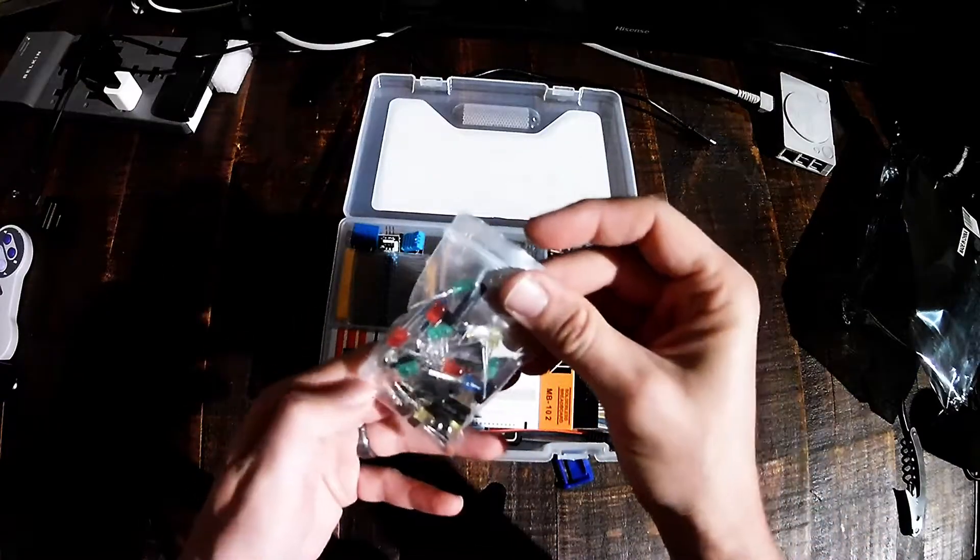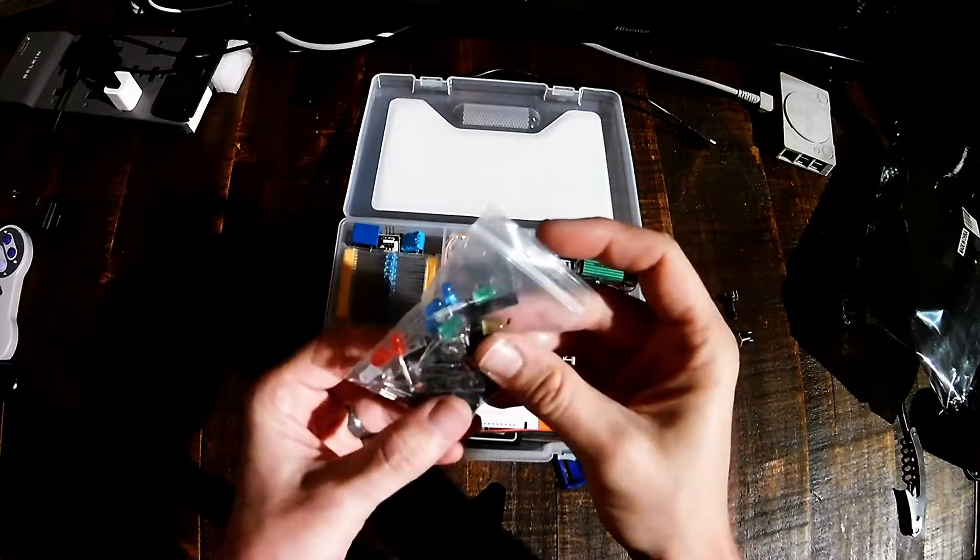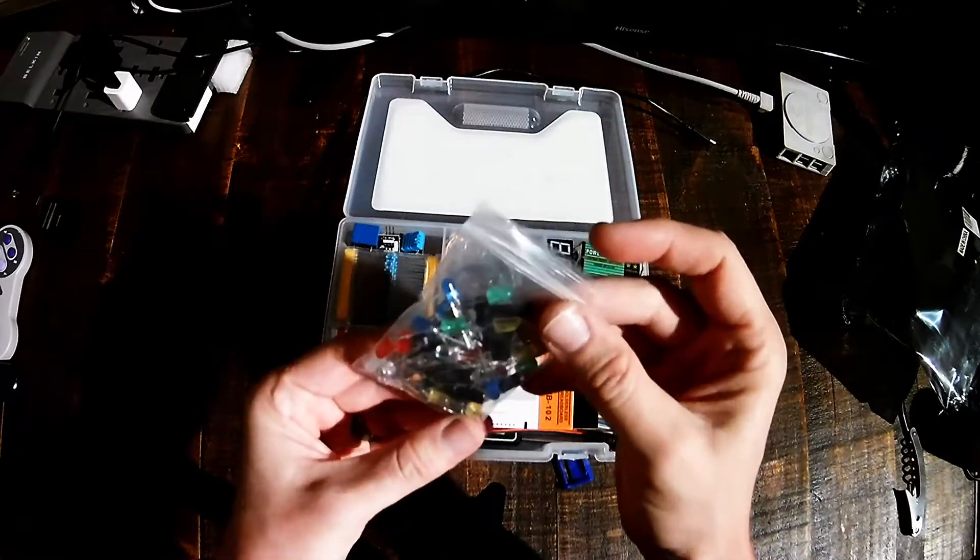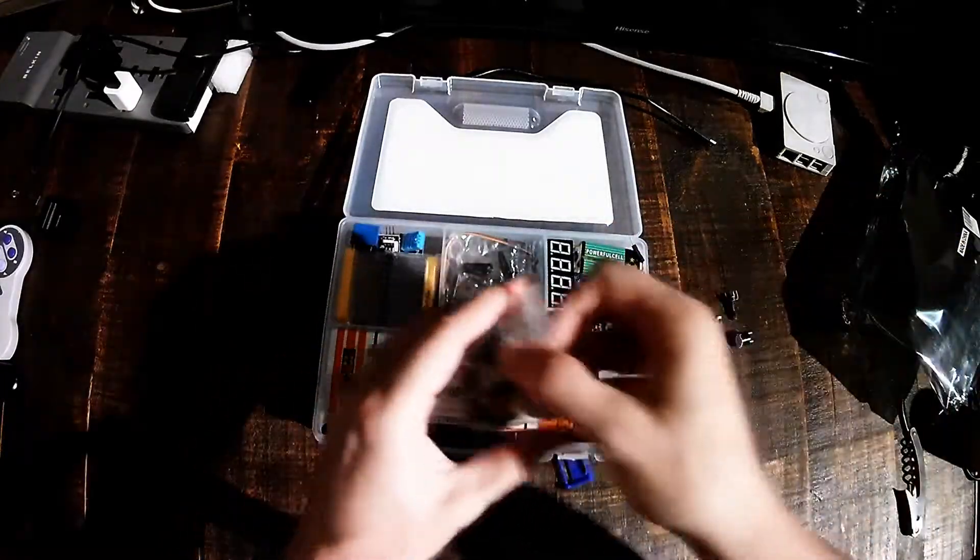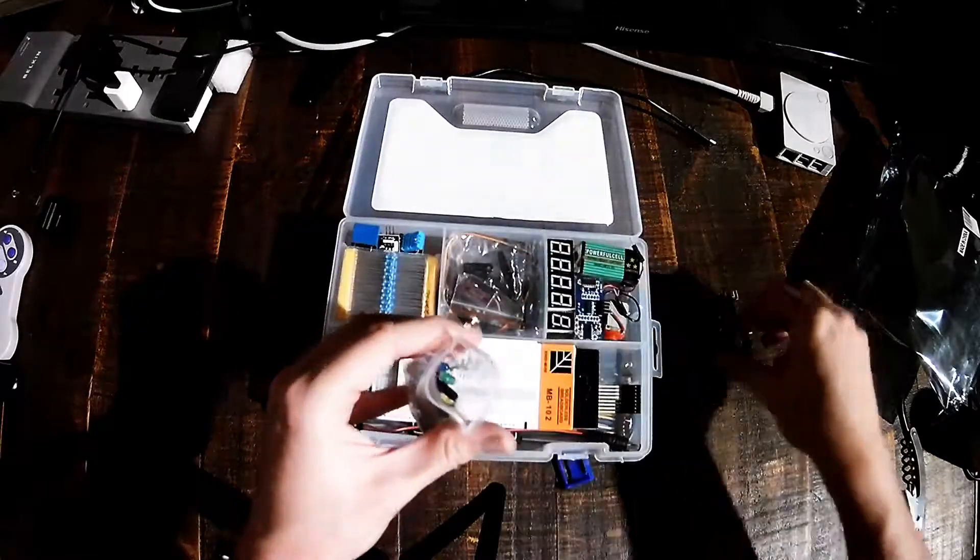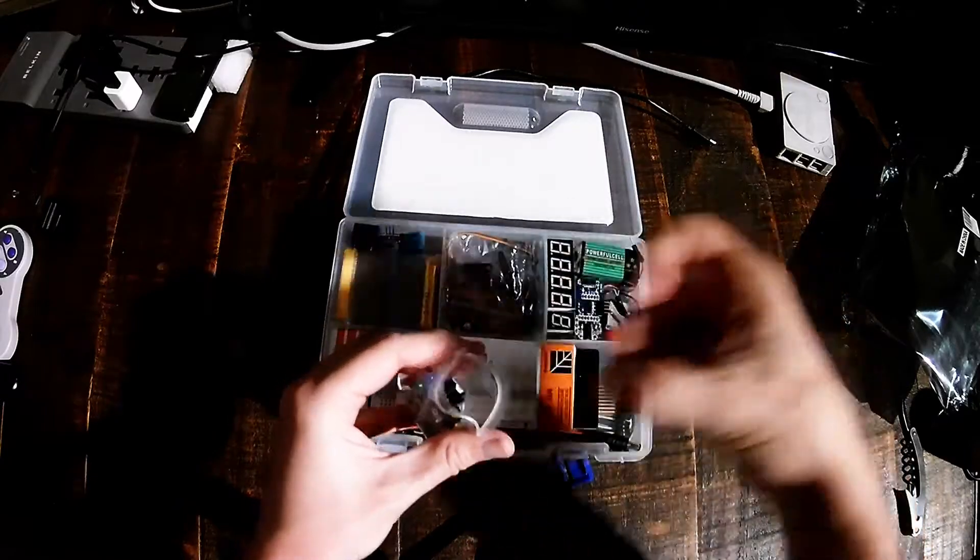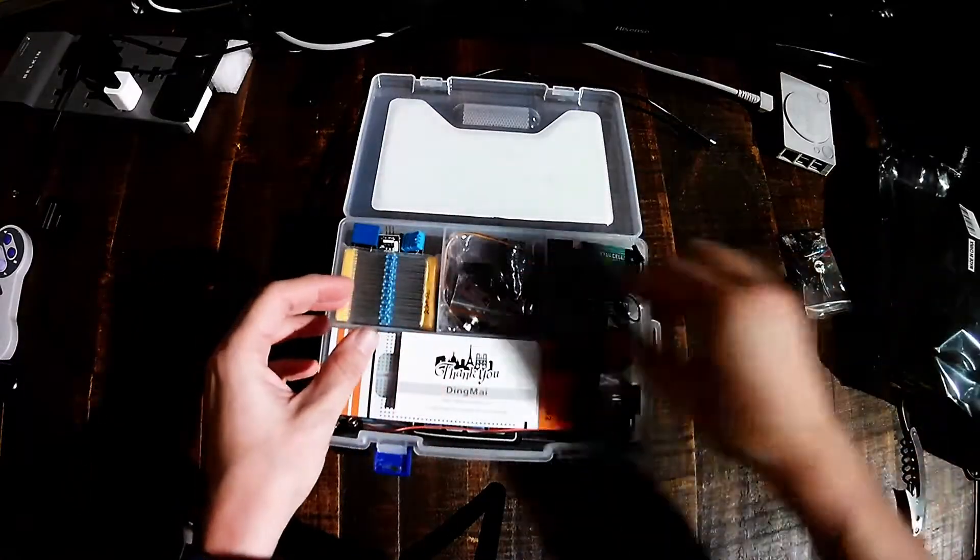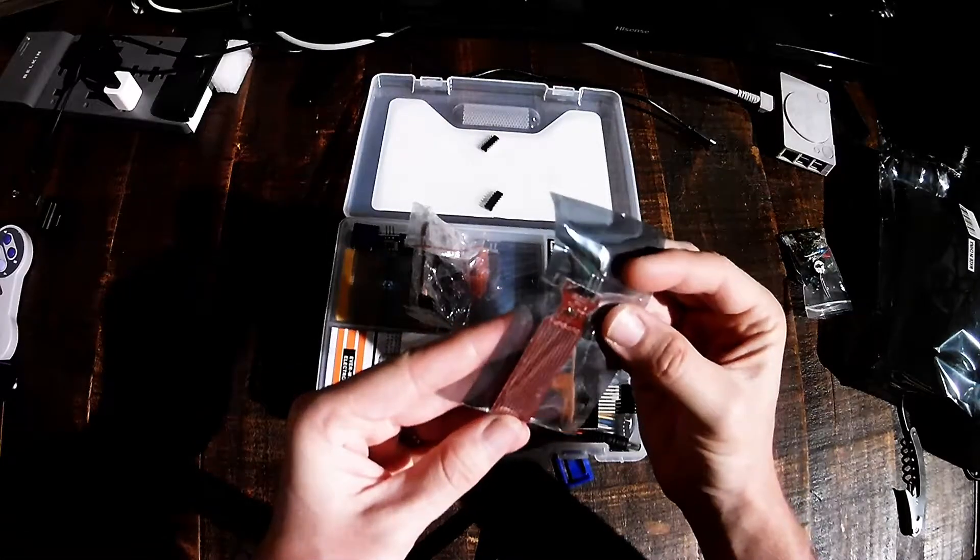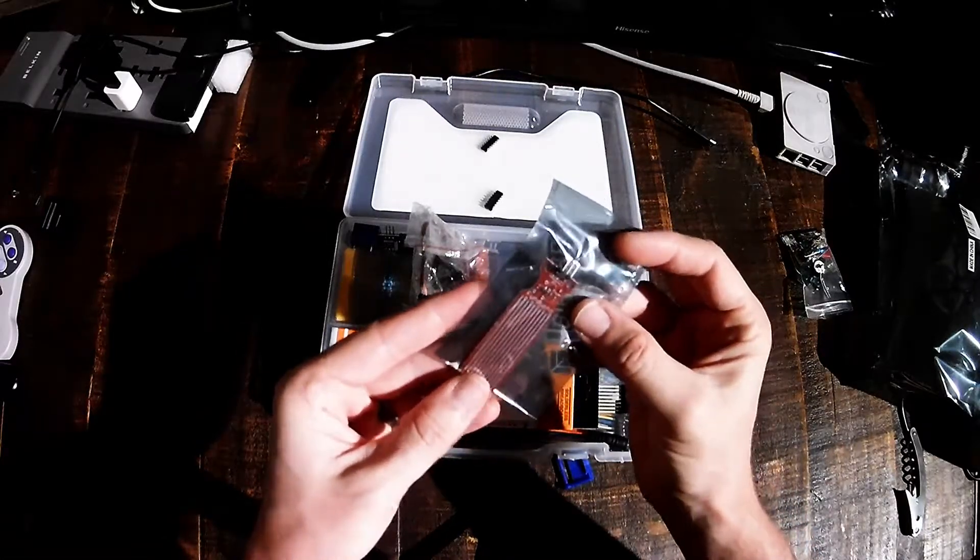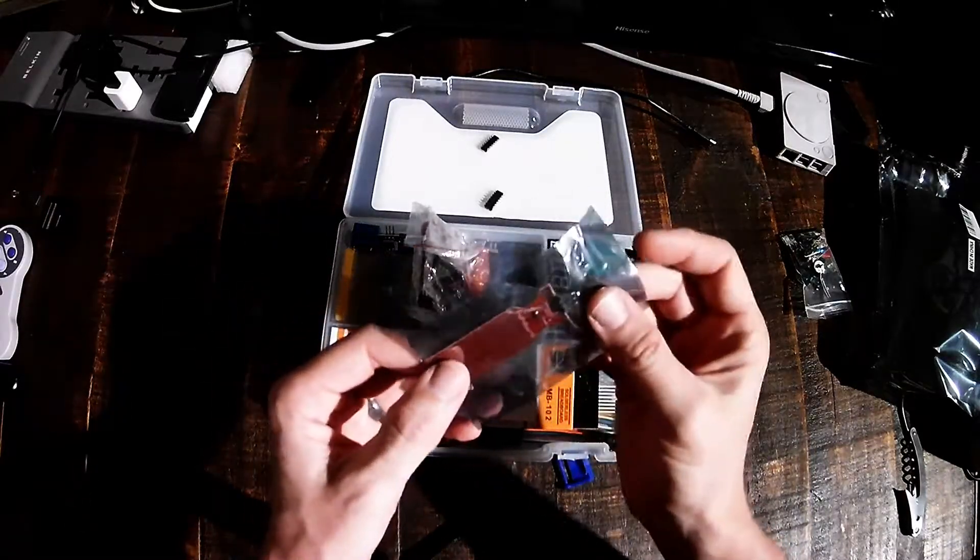And a ton of other pieces in here. It looks like it comes with a number of buzzers. The standard Arduino set only comes with one. It's got a lot of capacitors and other little circuit pieces in here. Let's see what else it comes with. Funduino board. It's a water sensor. That could come in handy.